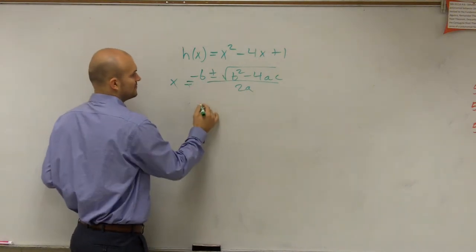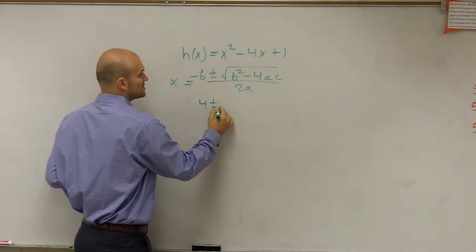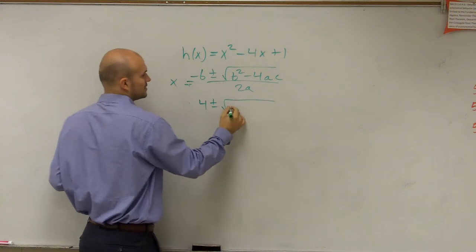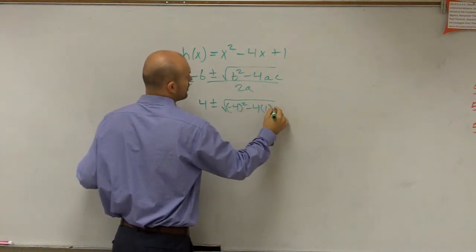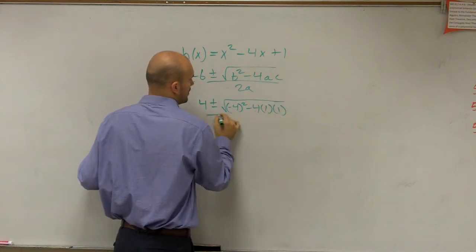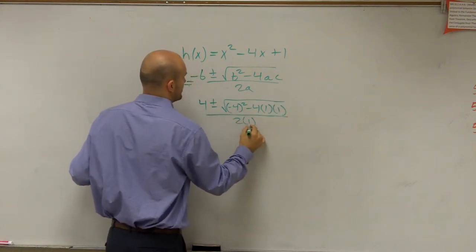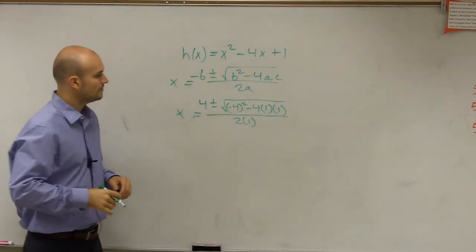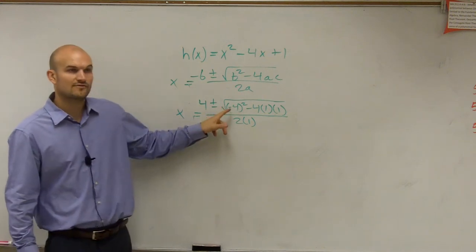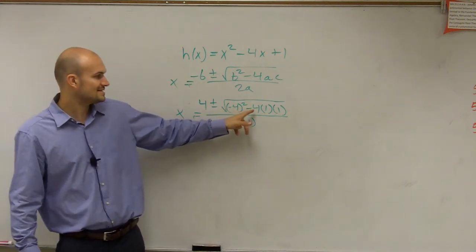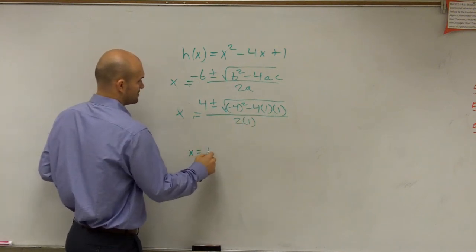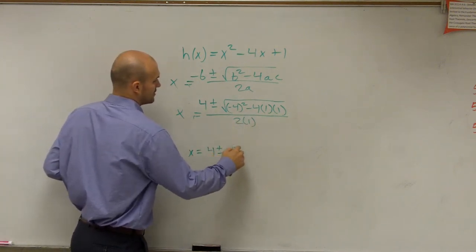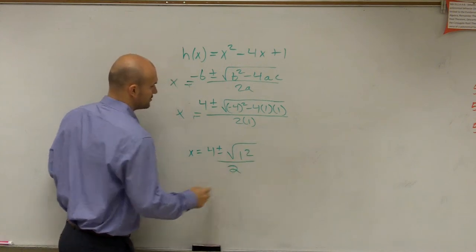So let's do this. So we have opposite of negative 4, which is going to be 4, plus or minus the square root of negative 4 squared minus 4 times a, which is 1, times c, which is 1, all divided by 2 times 1. Right? So there, negative 4 squared is 16. 16 minus 4 is going to be 12. So I have x equals 4 plus or minus the square root of 12 divided by 2.